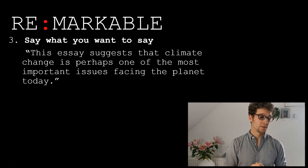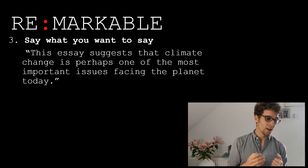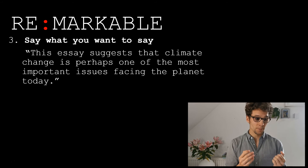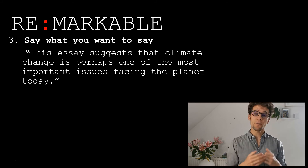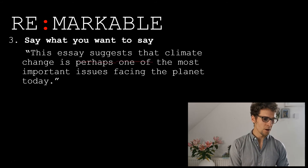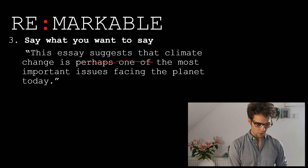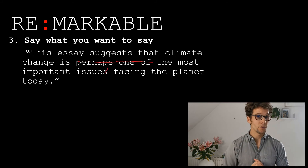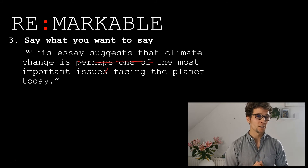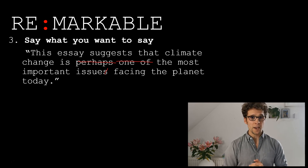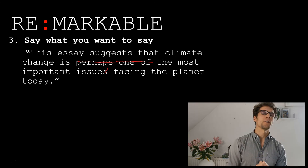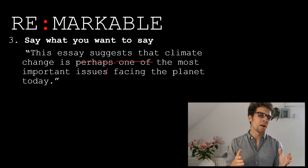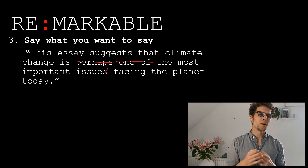If you're going to make a very strong, reasonable statement — such as 'climate change is the most important issue facing the planet today' — then say that. Don't negate the entire sentence by putting in 'perhaps' or 'one of,' or by adding an 'S' to make it 'issues.' Say it is the most important issue. The student who writes that sentence is trying to tell me climate change is the most important issue. By qualifying their statement they're not improving it — they are just muddying their argument and adding vagueness into it.